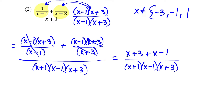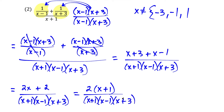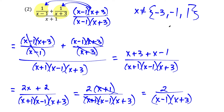From here we combine like terms: x plus x is two x, plus three minus one is two, over the three binomials. We can factor out a greatest common factor of two on top, leaving us with x plus one, which cancels one of the factors on the bottom. So we cancel the x plus ones and are left with two over x minus one times x plus three. Scanning for new restrictions: x equals one and x equals negative three were already stated. These two expressions are equivalent for all x not equal to negative three, negative one, and one.